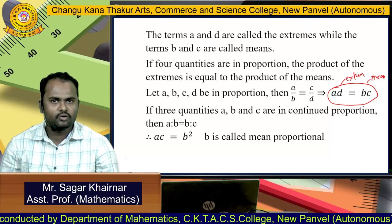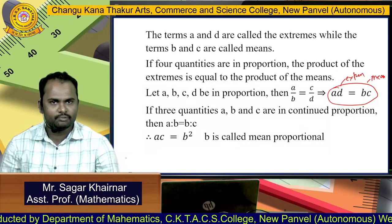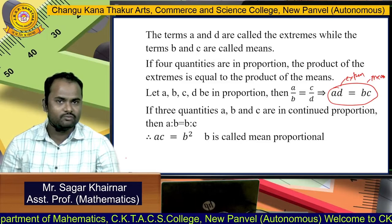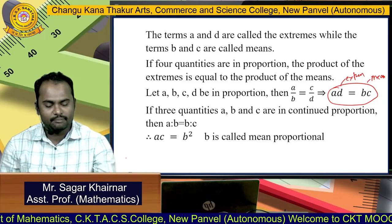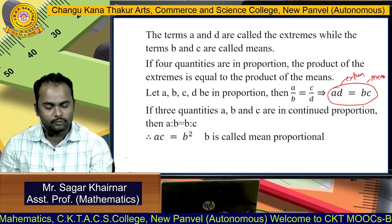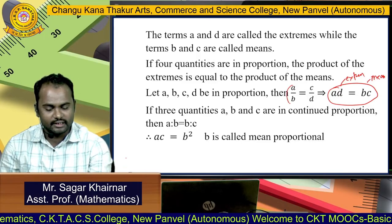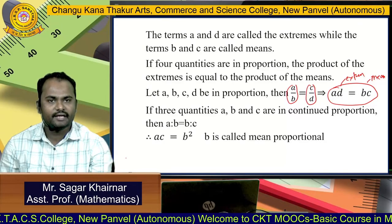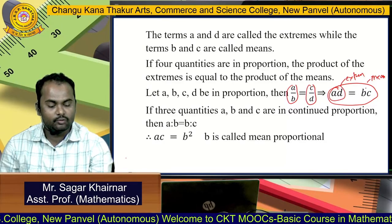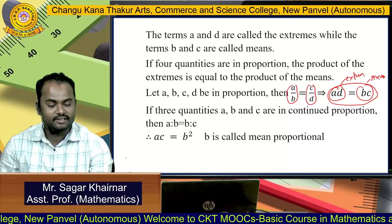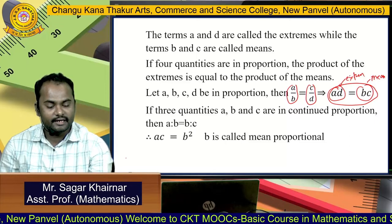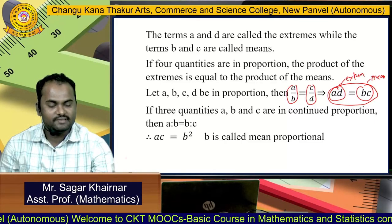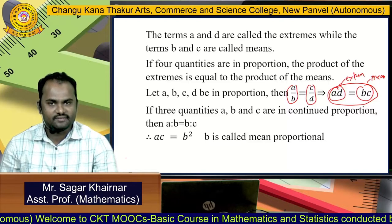If four quantities are in proportion, then the product of the extremes is equal to the product of the means. That means if we have A:B = C:D, then A × D = B × C, where A and D are the extremes and B and C are the means.